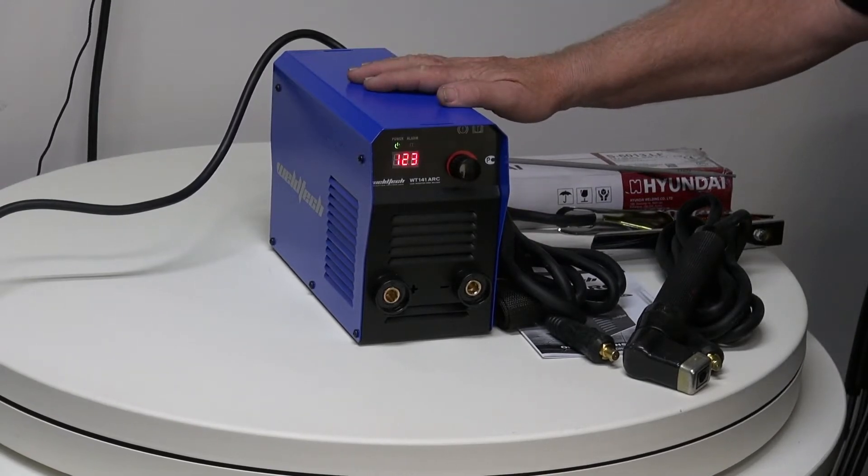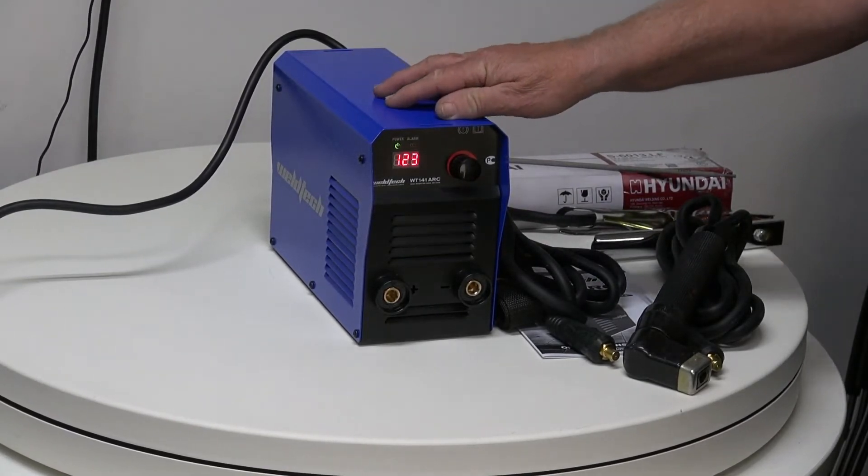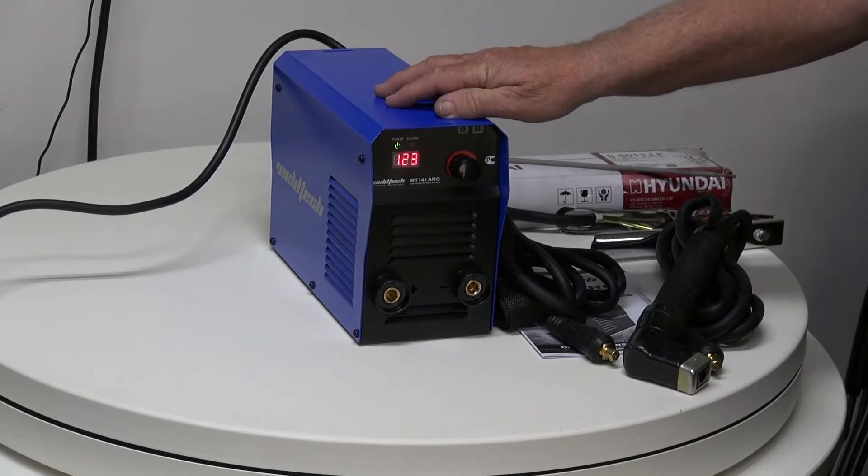The 141 has the biggest advantage of having a 10 amp plug. So you can take it home and plug it into the normal power supply and start welding.